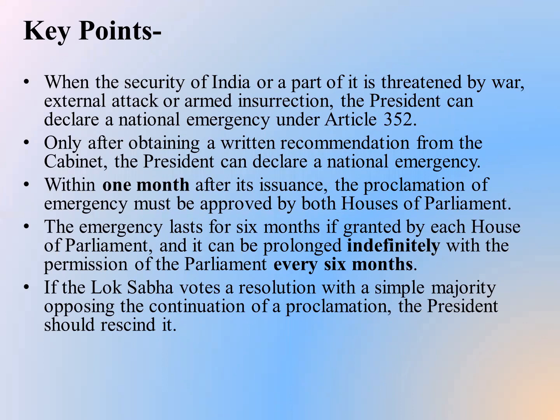There are some key points related to national emergency. As already discussed, there are three grounds: war, external aggression, or armed rebellion. The President can proclaim national emergency under Article 352 through a written recommendation from the cabinet. The President can then declare a national emergency. Within one month after its issuance, the proclamation of emergency must be approved by both houses of Parliament.